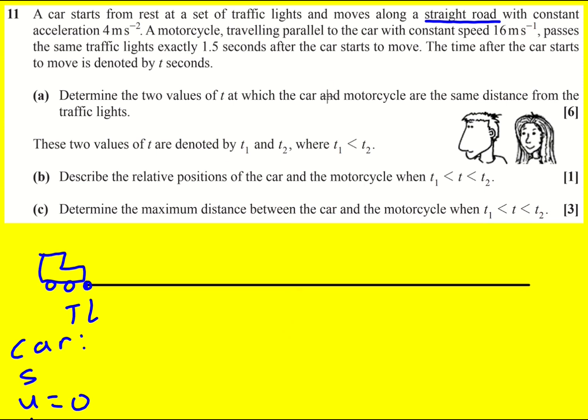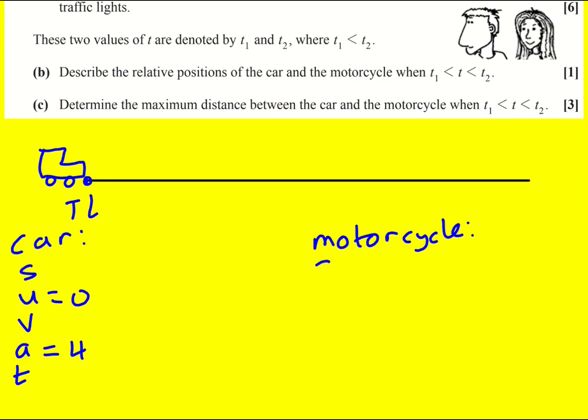Meanwhile, there's a motorcycle that travels parallel to the car with constant speed 16 meters per second. So actually in this case, the acceleration is 0, the initial speed is 16, and the final speed is 16. And you can actually just ignore these and simply use the fact that s equals ut. That's the only SUVAT equation you can then use.